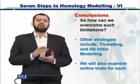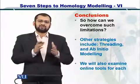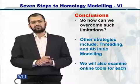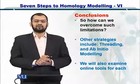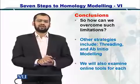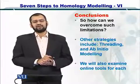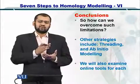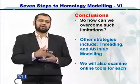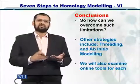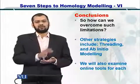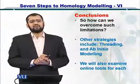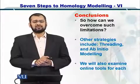Now, how do we overcome these limitations that are set in place because we are using a template structure? There are two other ways for the prediction of protein structures as well. One of them is called threading and the second one is ab initio modeling. We'll look at these approaches later. The point here is what to do if homology modeling fails, and therefore you also have other methods to predict the protein structure. We will examine the online tools available for each one of these strategies later as well.